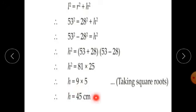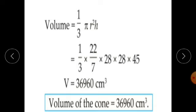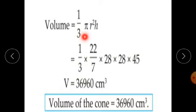The square root of 81 is 9 and square root of 25 is 5, so H equals 45 cm. The perpendicular height of the cone is 45 cm. Now find the volume of the cone. Volume of a cone equals 1 upon 3 pi R squared H.